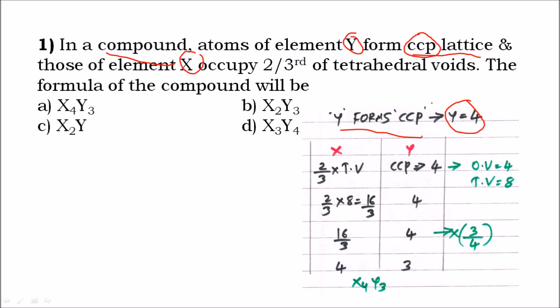From Y equals four, we can get information about the voids — how many octahedral voids and how many tetrahedral voids are present. If the number of atoms equals four, the number of octahedral voids equals four, and the number of tetrahedral voids is double the number of atoms, so it is eight.